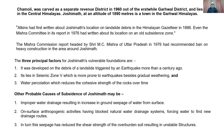Chamoli was carved as a separate revenue district in 1960 out of the erstwhile Garwal district and lies in the central Himalayas. Joshimat, at an altitude of 1890 meters, is a town in the Garwal Himalayas. Atkins had first written about Joshimat's location on landslide debris in the Himalayan Gazetteer in 1886. Even the Mishra Committee in its 1976 report had written about its location on an old subsidence zone, and recommended a total ban on heavy construction in the area around Joshimat.